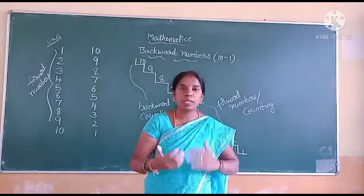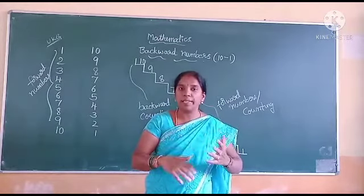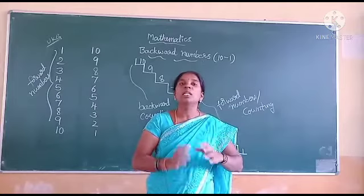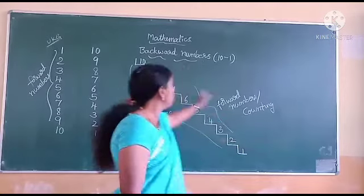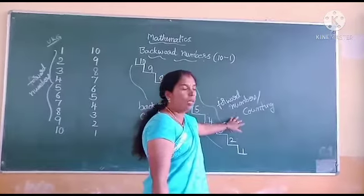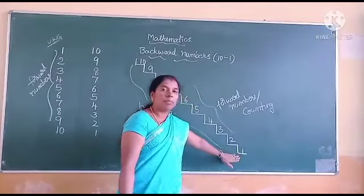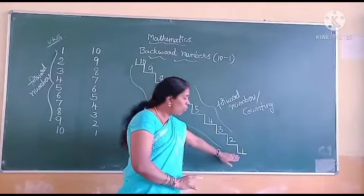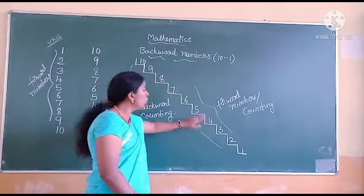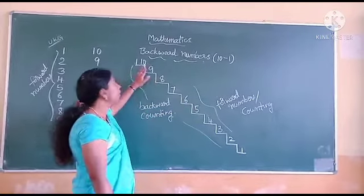When we move from the front, from the starting, this way we call forward counting. Forward counting — we start from 1: 1, 2, 3, 4, 5, 6, 7, 8, 9, 10.